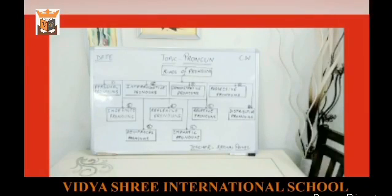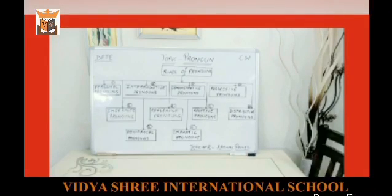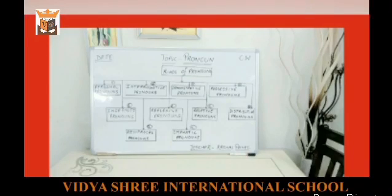If we go in detail, we can categorize pronouns into 10 kinds. The first category is personal pronouns. At number two, we have interrogative pronouns. Then we have demonstrative pronouns. At number four, we have possessive pronouns. Number five, we have indefinite pronouns. At number six, reflexive pronouns. At number seven, relative pronouns. Number eight, we have distributive pronouns. At number nine, reciprocal pronouns. And the last type of pronoun is emphatic pronouns.